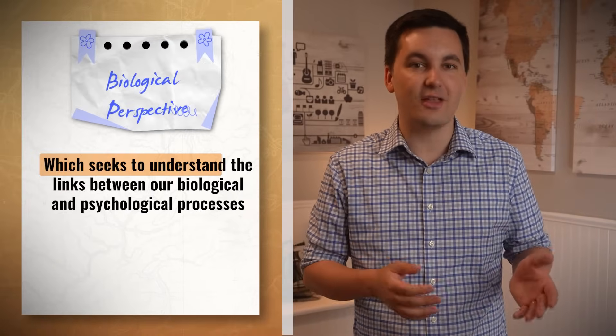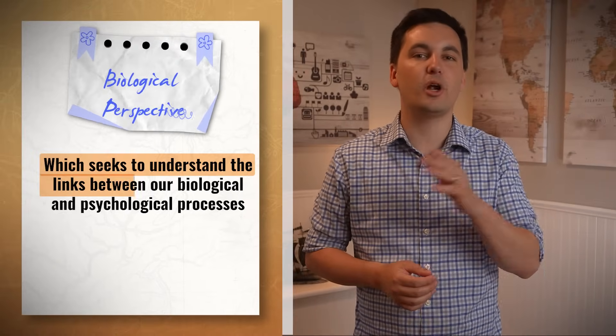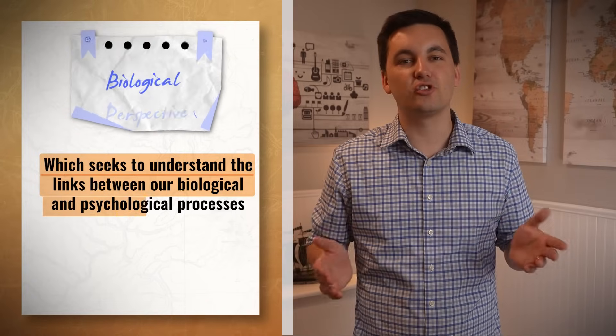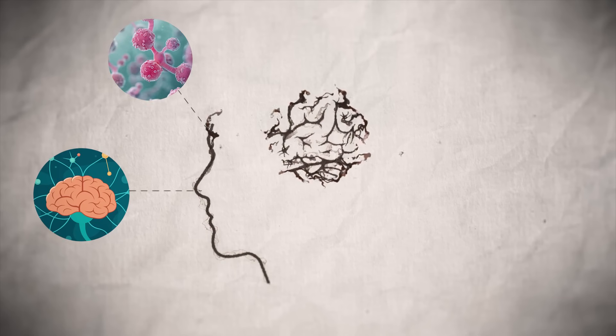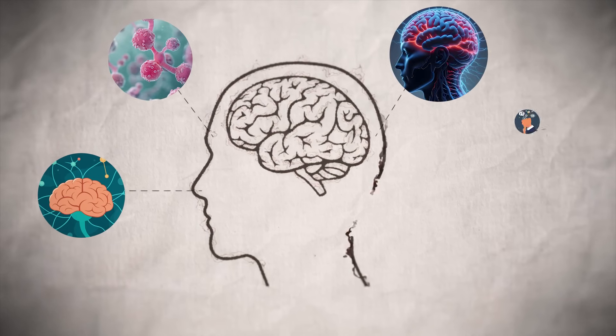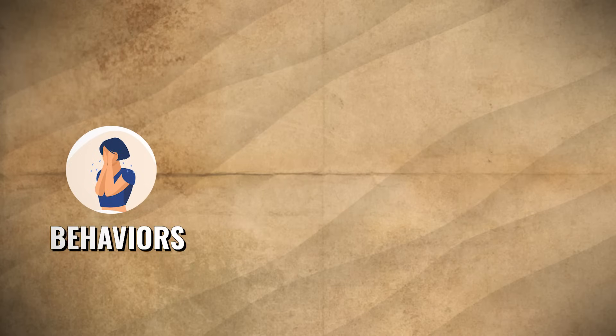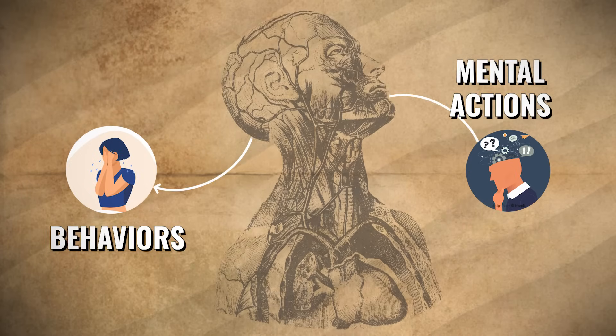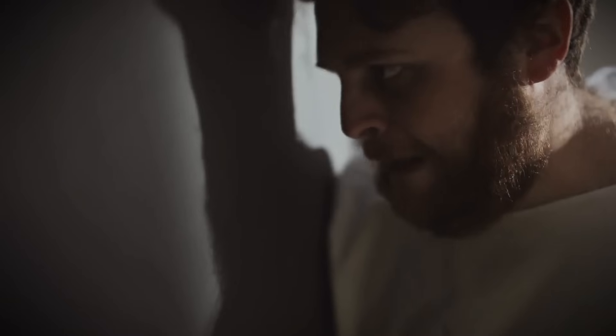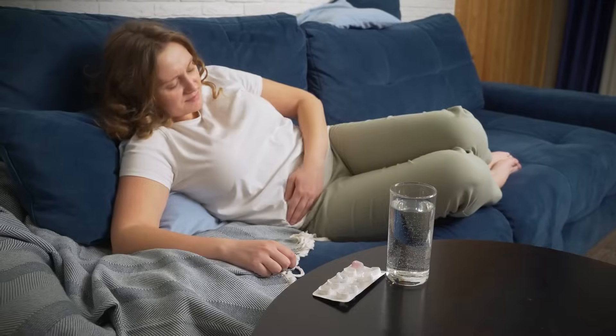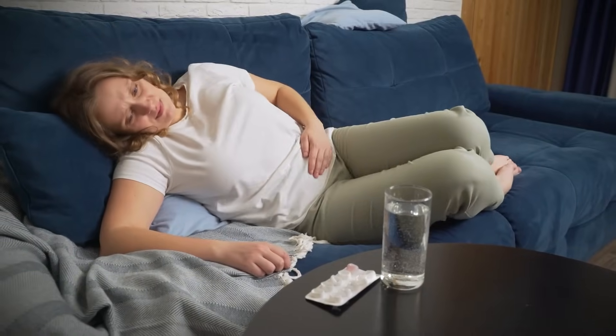The next perspective is the biological perspective, which seeks to understand the links between our biological and psychological processes. It focuses on the brain, neurotransmitters, hormones, and the nervous system's role in influencing thoughts and actions — essentially, how behaviors and mental processes are influenced by our nervous system. This perspective allows us to better understand different neurological conditions, mental disorders, and the effects of medication on behaviors.